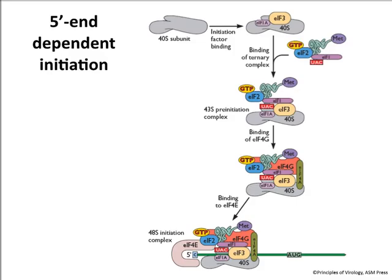This 40S ribosome then binds what's called a ternary complex, composed of the initiator tRNA carrying methionine — the first amino acid — a molecule of GTP bound to EIF2, and EIF1. That's why it's called a ternary complex: three components. This will be important later when we talk about regulation. This binds the 40S to give you the 43S pre-initiation complex.